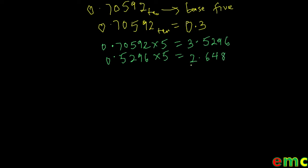As in the last example, you bring out the whole number you got from your multiplication — we bring out 3 — and then multiply the decimal part by 5. So we have 0.5296 multiplied by 5, which gives us 2.648. Bring out your 2. Multiply the rest — 0.648 — by 5 once again, and you get 3.24.